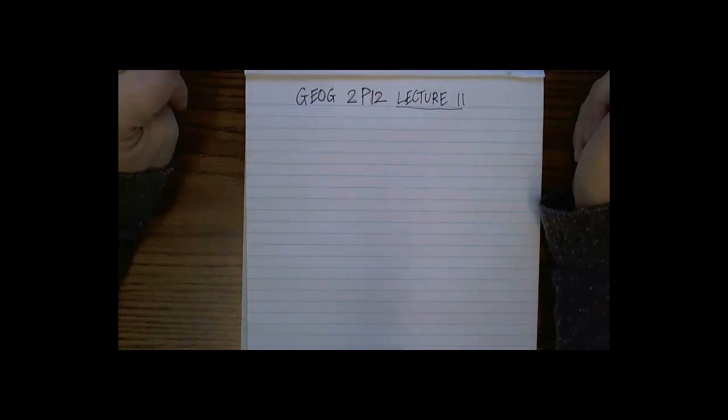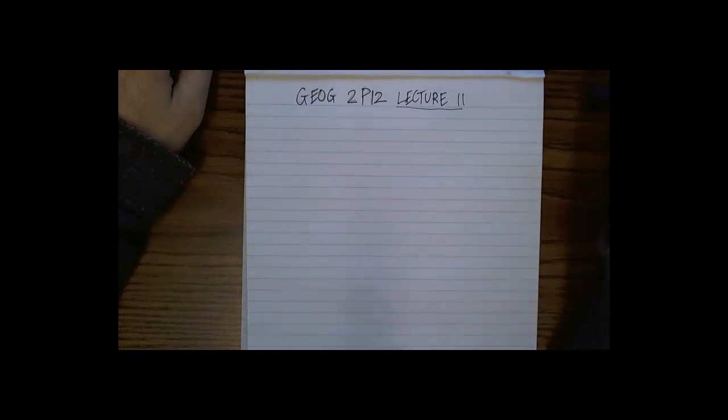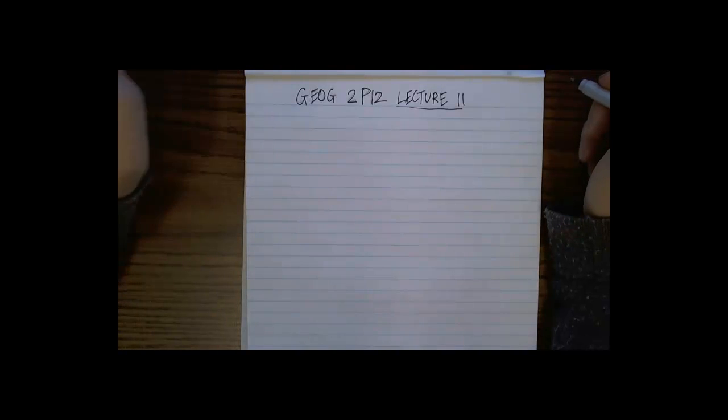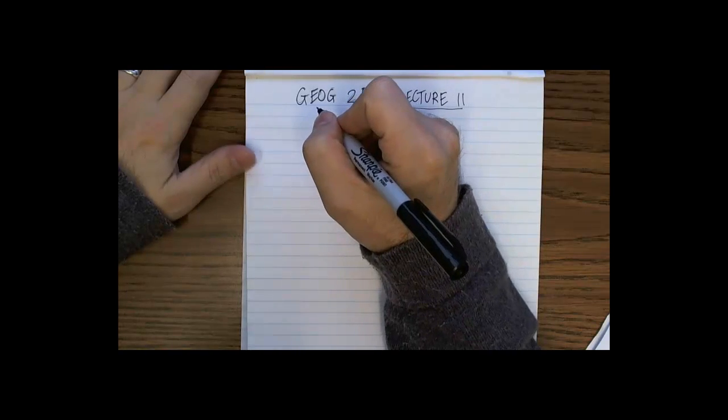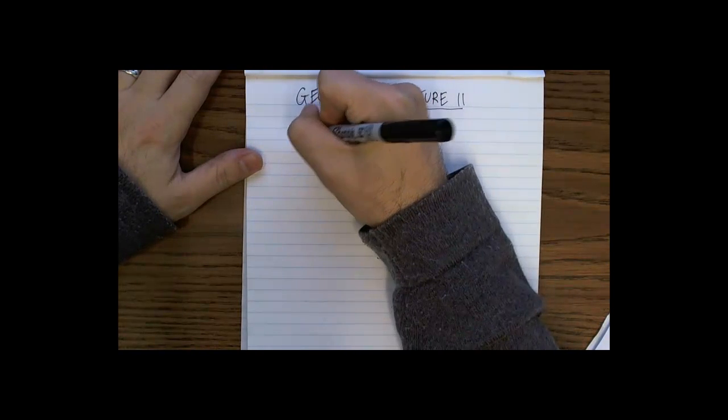This deals with Z-distributions and how we find the area under the curve using Z-distributions and Z-transformations. Let's start out with, let's assume for the sake of argument...